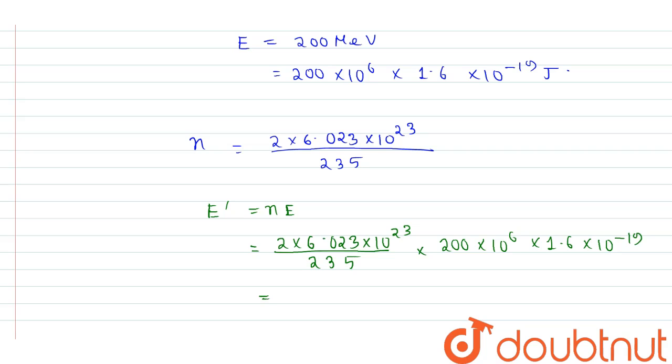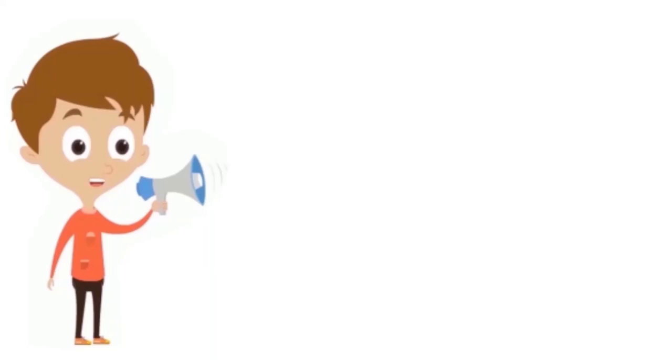E dash equals to 4.56 into 10 power 4 kilowatt hour, and this is our answer. Thank you.